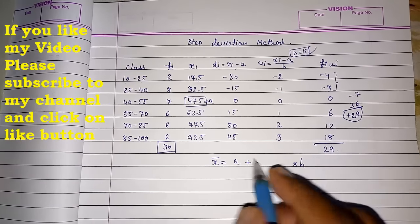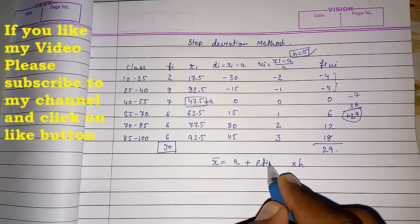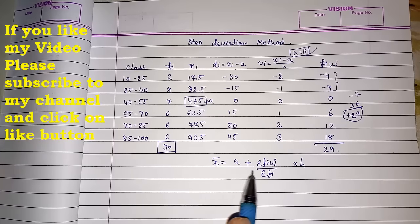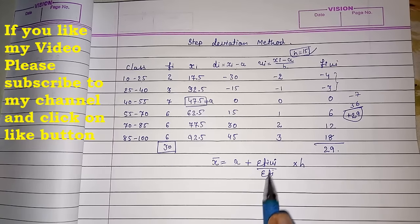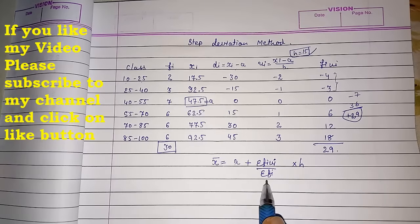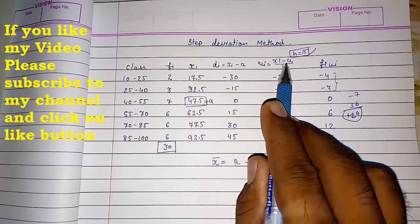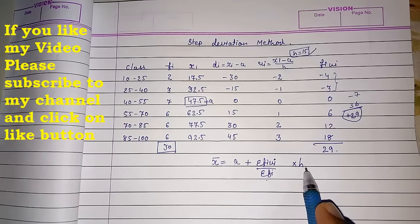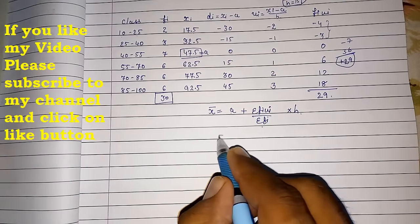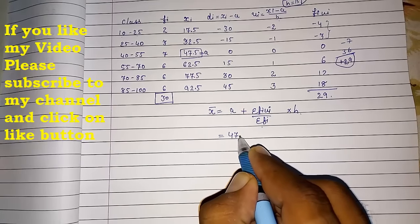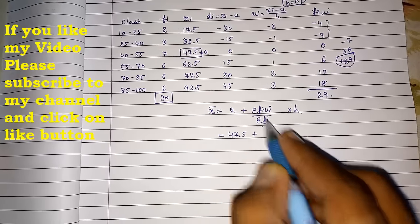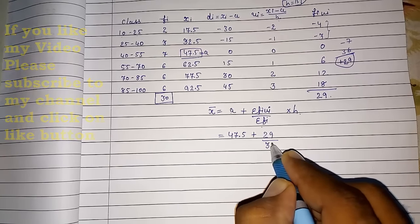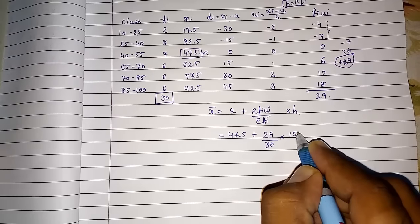And in between what we were doing. Generally sigma Fi UI upon sigma Fi. In assumed method we had only added A and then Fi DI by sigma Fi we had done. Here we had subtracted A and then divided by H. So we are going to multiply it by H. So now our assumed mean was 47.5 plus Fi UI 29 by 30 into H is 15.